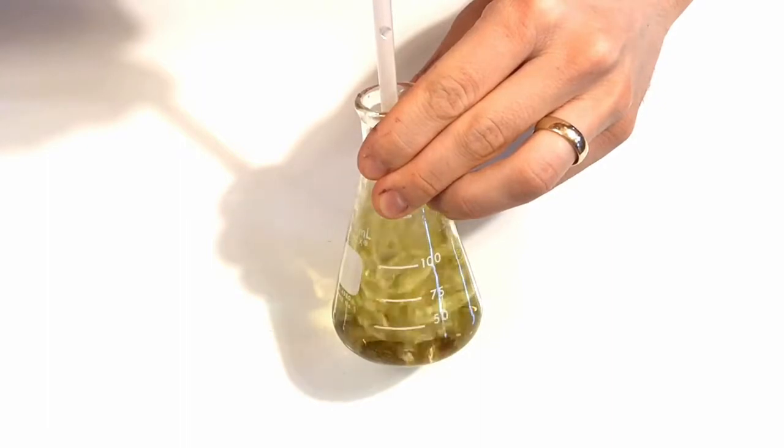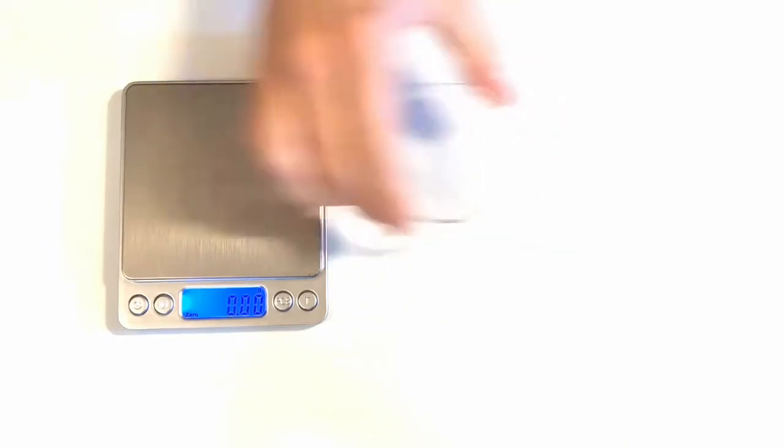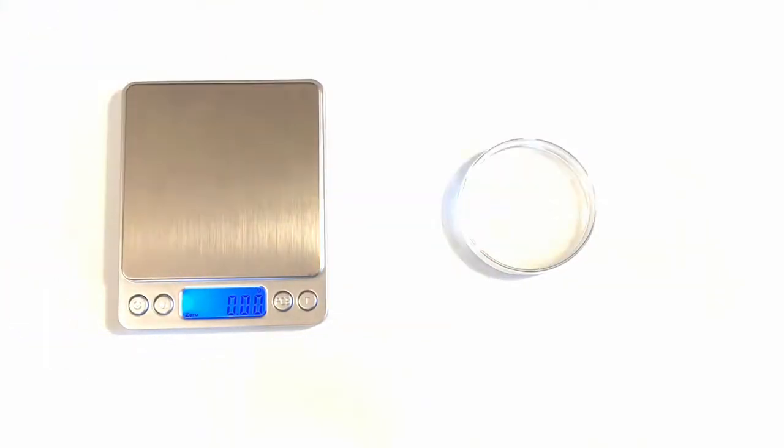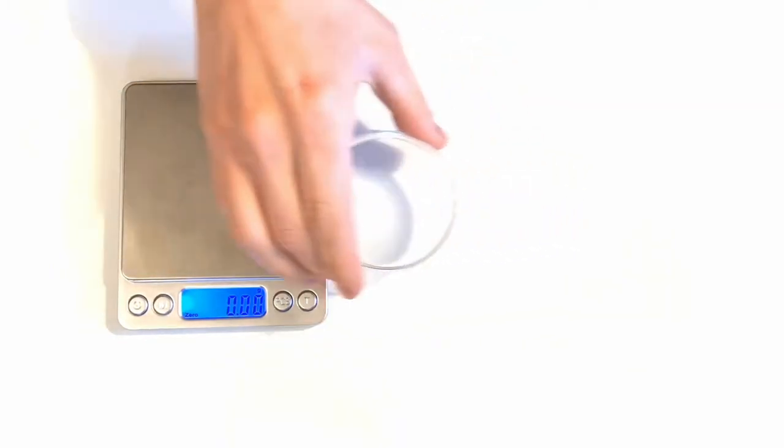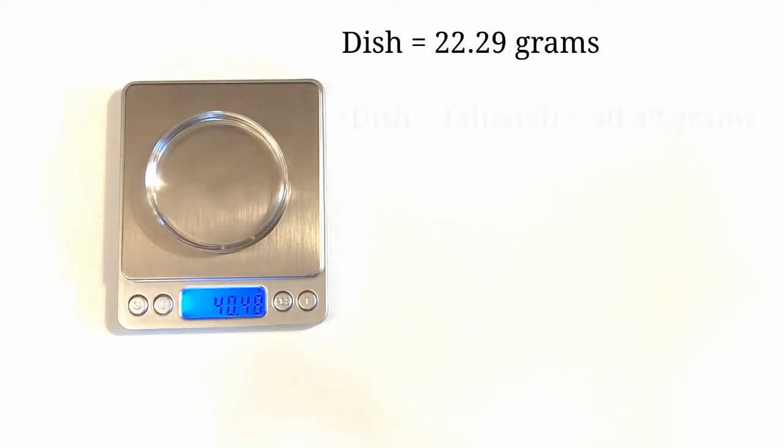The other tool we can use is BTB. It turns yellow when it becomes acidic, as is the case when carbon dioxide is added. This means BTB can help us identify gases. First, let's mass our dish all by itself - the dish weighs 22.29 grams. Now let's take a little ethanol and fill our dish about halfway. The ethanol plus the dish give us a mass of 40.49 grams.